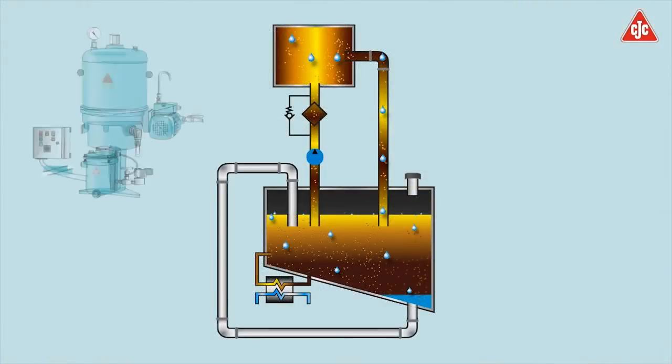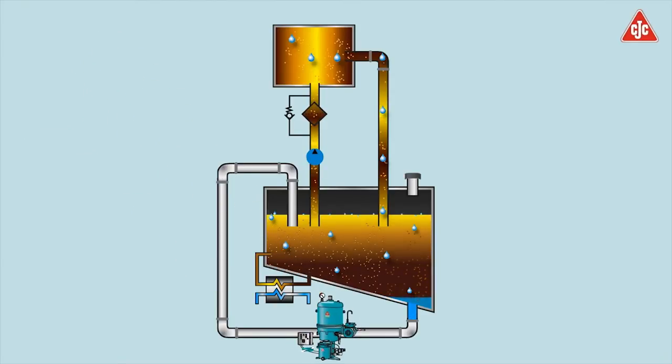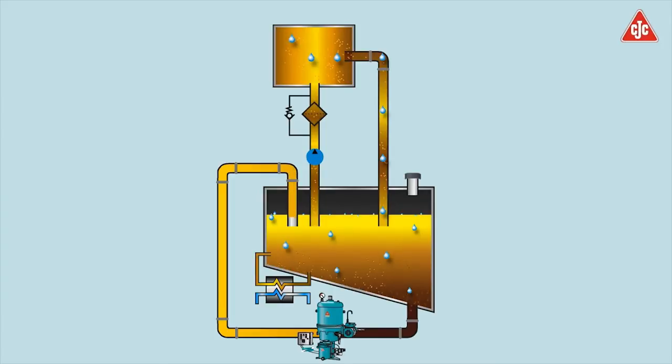A CJC filter separator is installed offline. The oil is pumped from the lowest point of the oil tank and enters the CJC filter, and the CJC inserts retain the contamination. The clean and dry oil is returned to the system and contamination will be removed continuously.